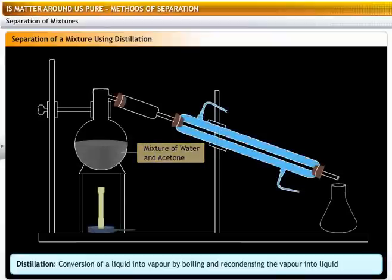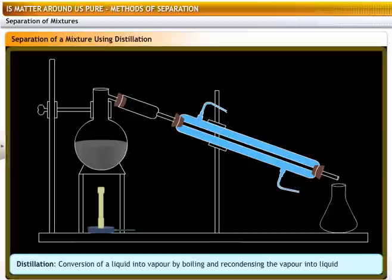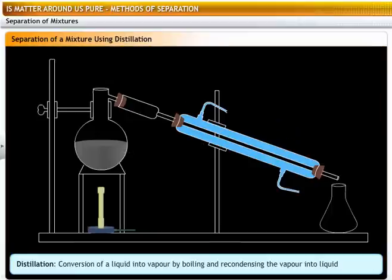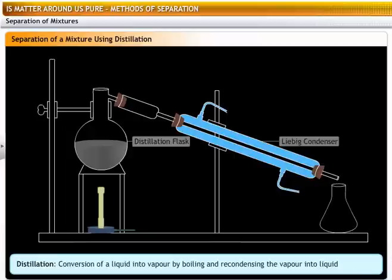To separate a mixture of water and acetone that form a miscible liquid pair, set up the apparatus as shown in the diagram. Put the mixture into a distillation flask. A distillation flask is a round bottomed flask with a tube at its neck. This tube is attached to a Liebig condenser.